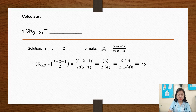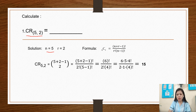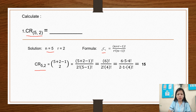Another example is combination of repetition of 5 objects taken 2 at a time. The given value for N is 5 and R is 2. The formula is C(N,R) = (N + R - 1)! / (R! × (N - 1)!). Substituting: (5 + 2 - 1)! / (2! × (5 - 1)!).